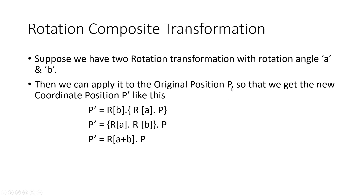So we can apply it to the original position P to get the new position P' after rotation. First we have the first rotation operation A, and we do multiplication with our original position coordinates P, and then we perform the multiplication between the two rotation matrices. Once we perform the multiplication between these two matrices we get the final rotation — this is known as the rotation composite transformation, that is R is equal to A plus B. You can just add the two angles A and B and perform the rotation with that addition.